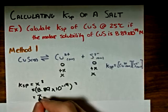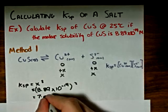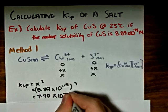And this ends up giving us an answer of 7.90 times 10 to the negative 37.